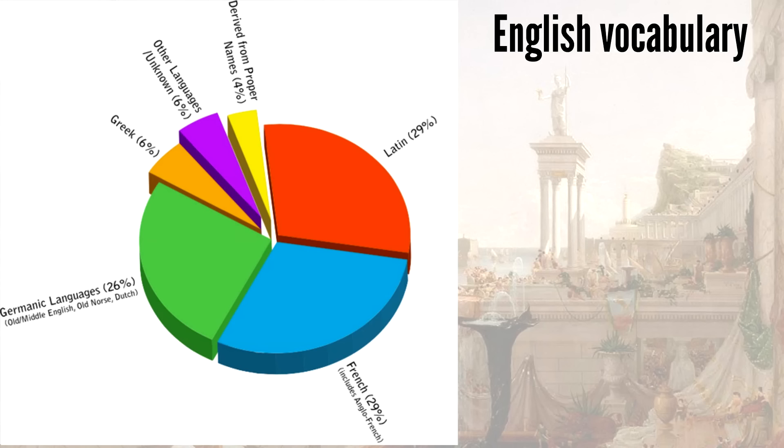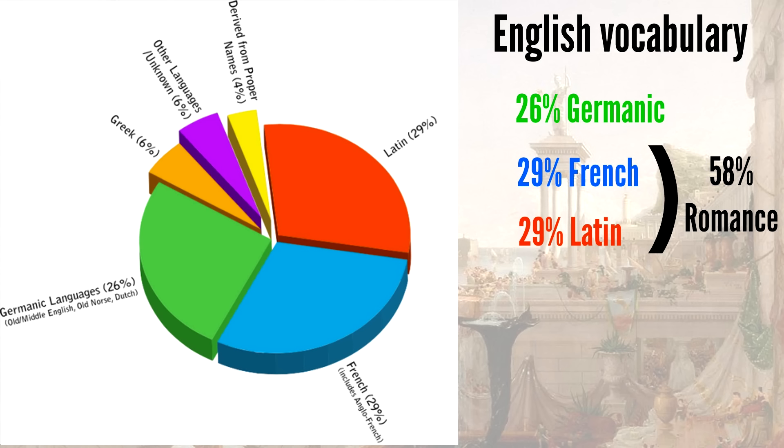Well, English vocabulary is 26% Germanic, and it's 29% French. Wait, you're telling me that there's more French vocabulary than Germanic vocabulary, even though it's a Germanic language? That's odd. Oh, but wait, there's also 29% Latin vocabulary, so that means together 58% of English vocabulary comes from Romance languages?